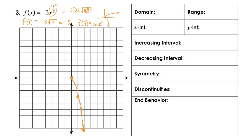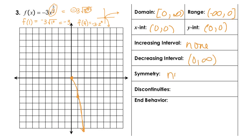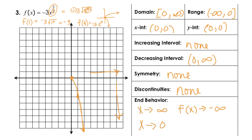Let's talk about our domain. Since we are on the right side with the even root, the domain has to stay at 0 or bigger – from 0 to positive infinity, included. The range is going to be from negative infinity up to 0. Our x-intercept was at (0, 0), and y-intercept at (0, 0). No increasing; decreasing from 0 to infinity. No symmetry because of the even root. No discontinuities. End behavior: as x approaches positive infinity, f(x) approaches negative infinity; as x approaches 0, f(x) approaches 0.